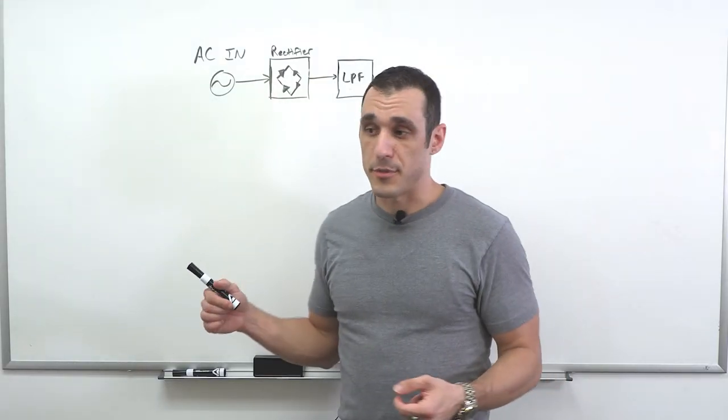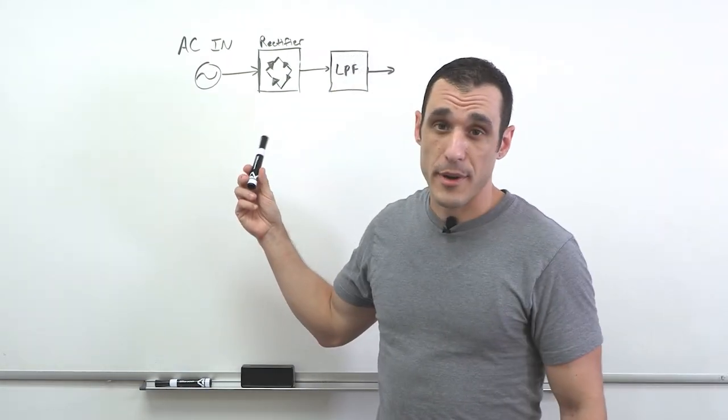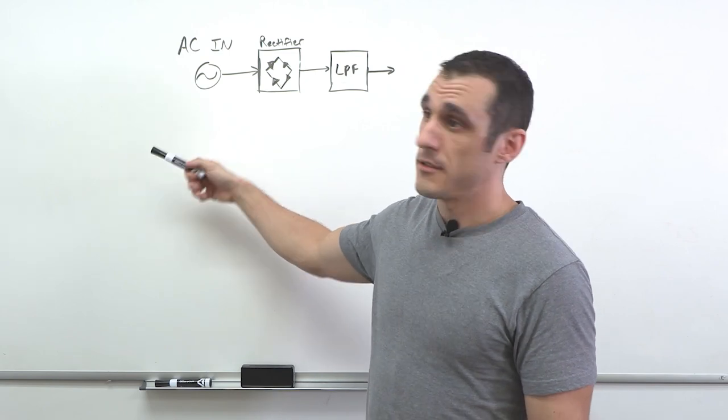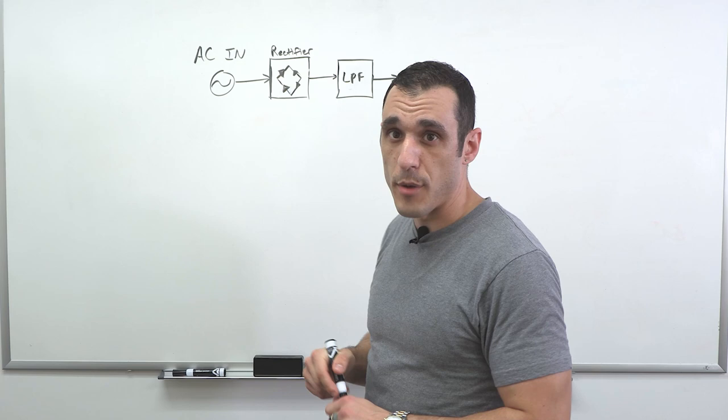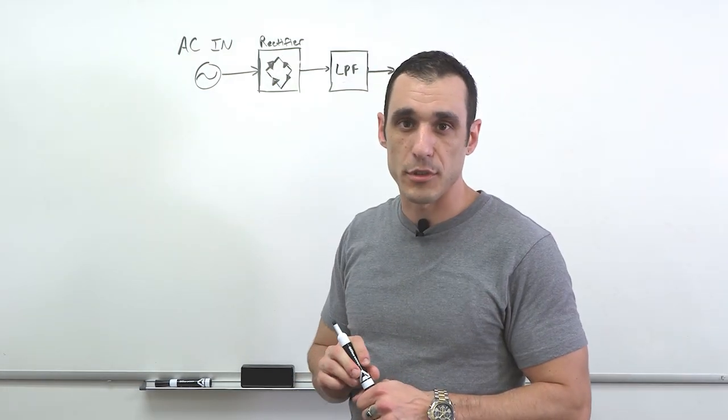We're talking about power distribution and power regulation onto your PCB. The typical power regulation strategy to get to DC power on your board is you take an AC input, usually from the grid, you rectify it to get a voltage waveform that has some ripple, put it through an LPF, low pass filter to get a little more stable DC voltage.